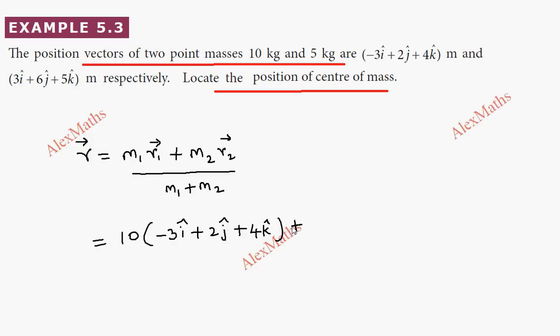m2 is 5 kg, plus 5 into that position vector 3i cap plus 6j cap plus 5k cap, whole divided by m1 plus m2, this is 10 plus 5.